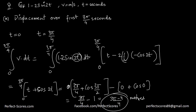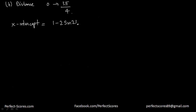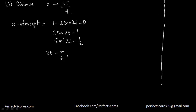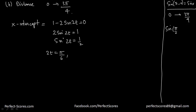The x-intercept occurs when 1 − 2sin2t = 0, so sin2t = 1/2. This means 2t = π/6 or, using the identity sin(π − x) = sinx, we get 2t = 5π/6. So t = π/12 or t = 5π/12. Any further solutions would go out of the range 0 to 3π/4.